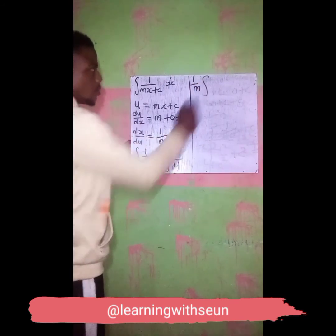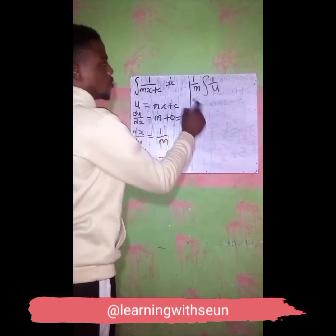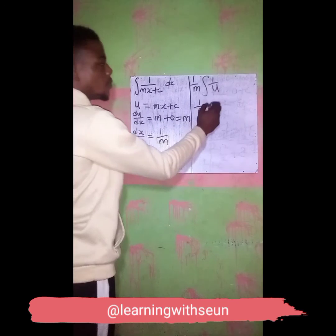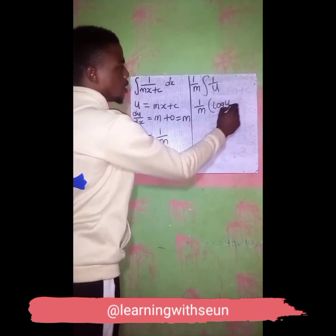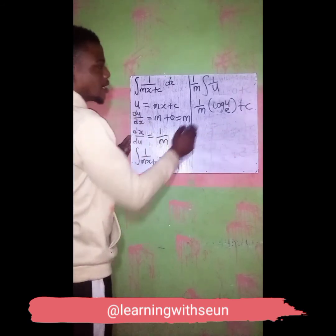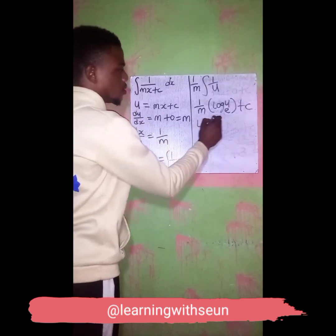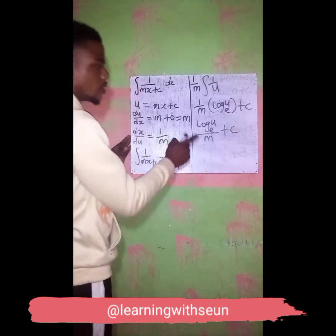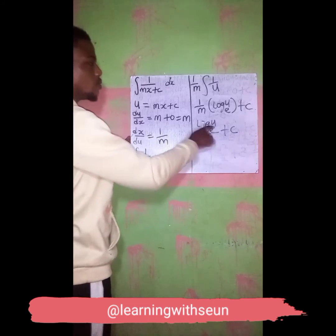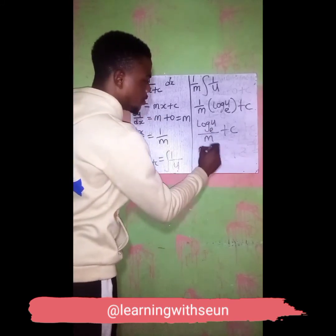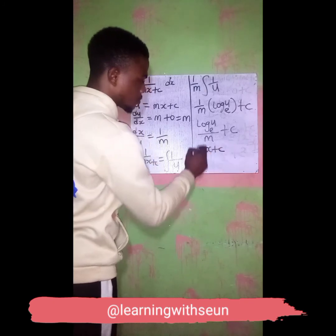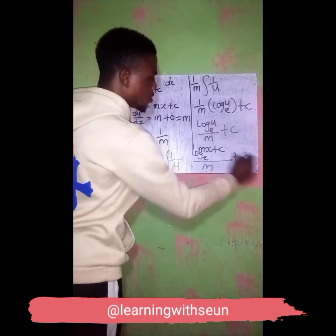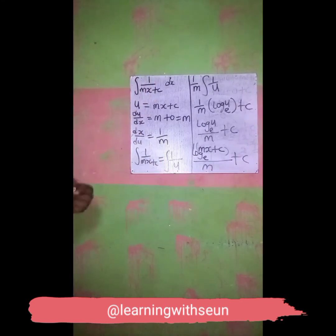From here I will now say 1 over m, integral value of 1 over u. If I integrate 1 over u I have the natural log of u, plus C. So I can now say log u over m plus C. And don't forget our u here is mx plus c, so I will now say log(mx + c) all over m, plus C. So this is going to be the final answer.